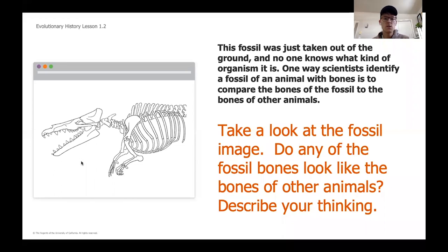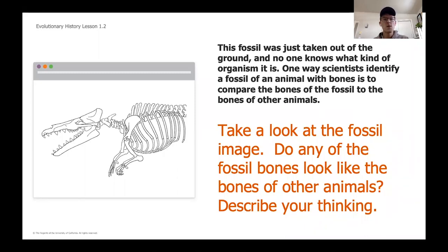The first thing we're going to do to warm up today is look at a fossil. Here's our fossil right here — this is a picture of a fossil that was just taken out of the ground, and no one knows exactly what type of organism it is. One way that scientists identify an unknown fossil is to think about what animals they already know that might have some similarities. Take a look at the image and start to think: do any of these bones look like bones from animals you might be more familiar with?